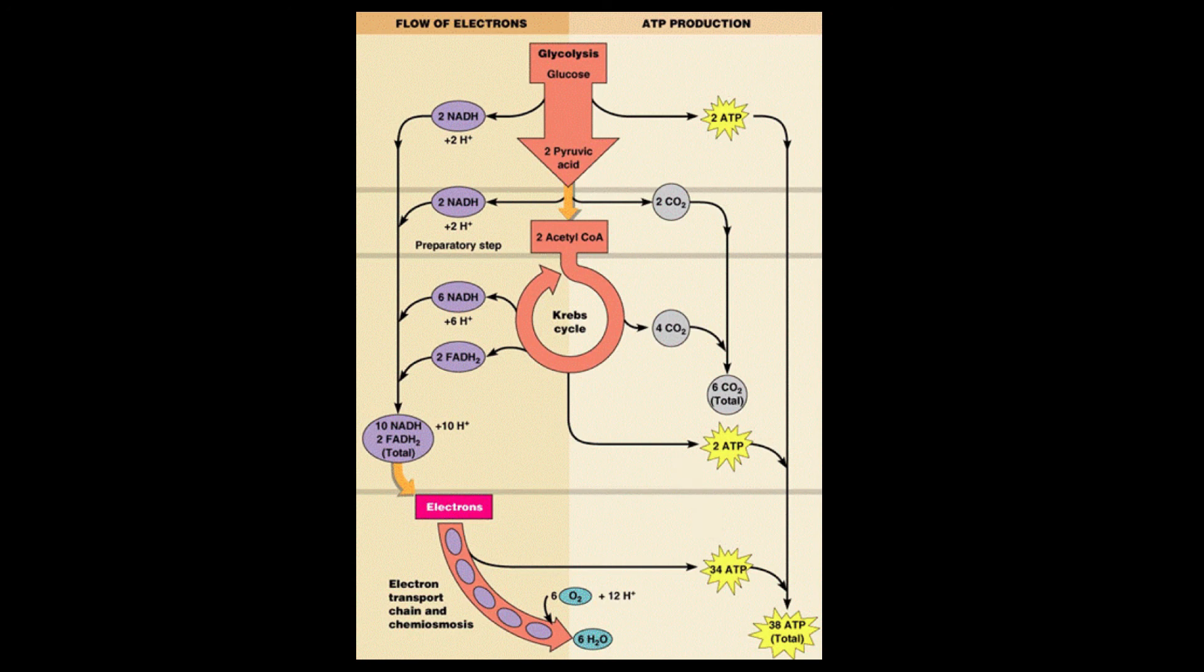Sometimes the electron transport chain seems like a whole lot of drama, but we just made 34 ATP. In glycolysis and the Krebs cycle, we only made 4 ATP total. A whole lot of drama? Yes. Worth it? Definitely.